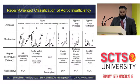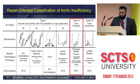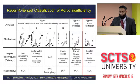This is a repair-oriented classification of aortic insufficiency published by the Brussels group: type 1 with normal cusp motion, type 2 with cusp prolapse, and type 3 with cusp restriction. This classification is rigorously followed at our center.